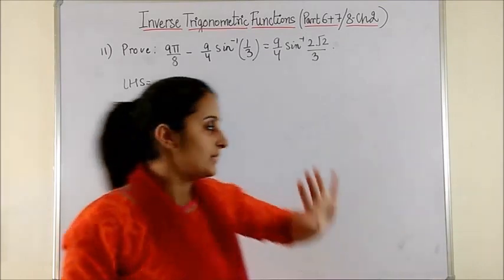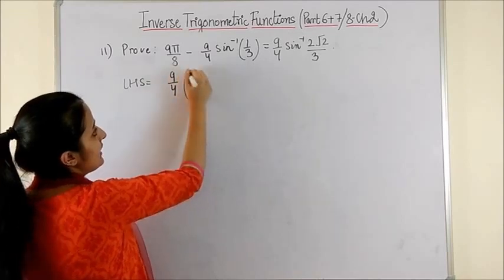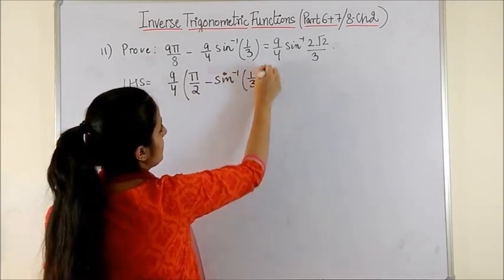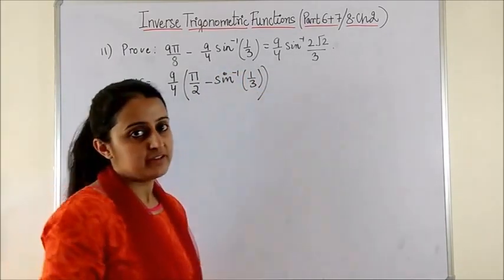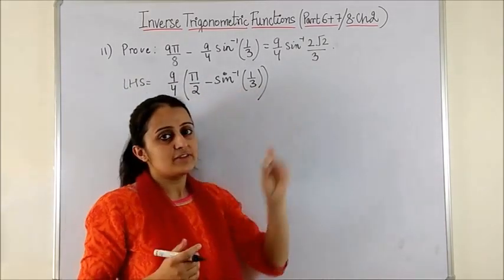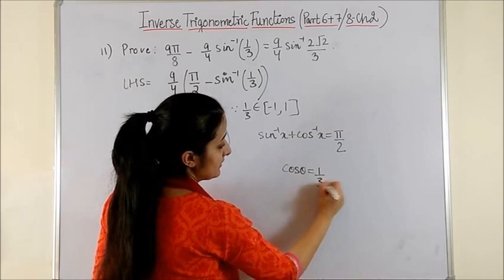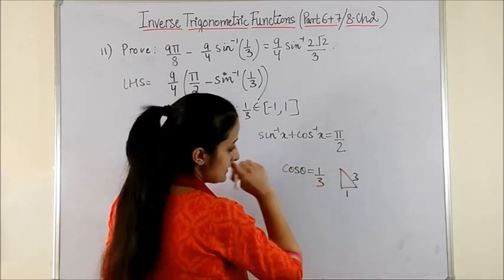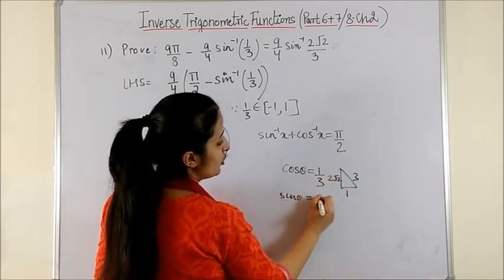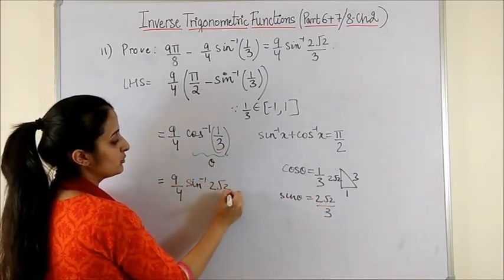Please have a look at question 11 — trust me, it's a very simple question. If you consider the LHS and take 9/4 common across three expressions, you're left with π/2 − sin⁻¹(1/3). Recollecting property 5 from the previous video: sin⁻¹x + cos⁻¹x = π/2. This brings us to cos θ = 1/3, and from a trigonometric triangle, sin θ = 2√2/3, so θ = sin⁻¹(2√2/3).